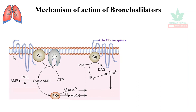Another pathway involves acetylcholine acting through M3 receptors of the parasympathetic nervous system, causing activation of G protein-coupled receptors. The Gq subunit is activated, forming different second messengers such as diacylglycerol, IP3, and calcium. All these lead to bronchoconstriction.